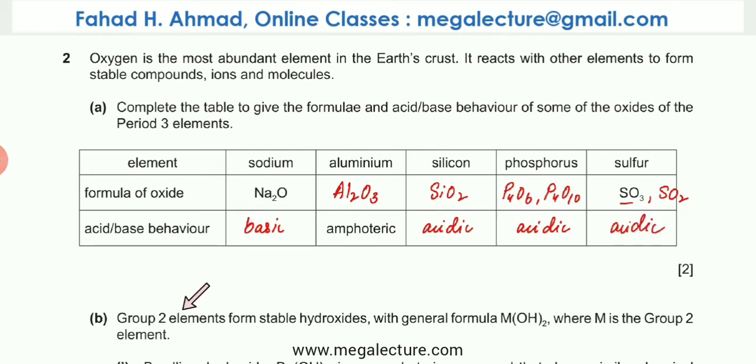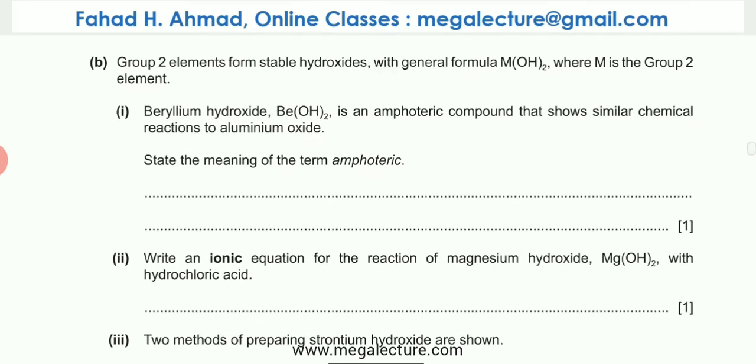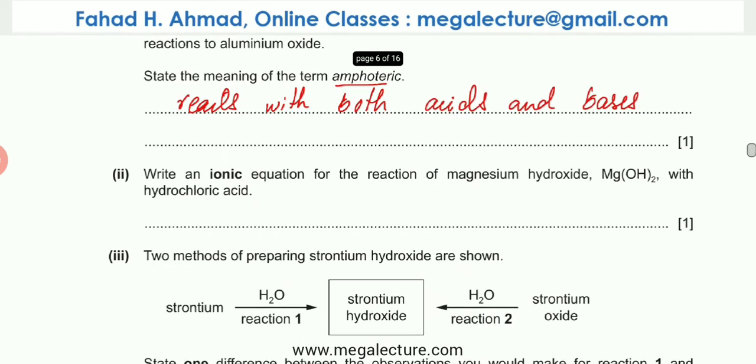Part B of the question reads that Group 2 elements form stable hydroxides with the general formula M(OH)2 where M is the Group 2 element. Beryllium hydroxide is an amphoteric compound that shows similar chemical reactions to aluminium oxide. State the meaning of the term amphoteric. The meaning of the term amphoteric is that they are compounds that react with both acids and bases.